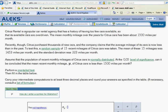Citrus Rental is a popular car rental agency that has a history of having too few cars available so that its available cars are overdriven. The mean monthly mileage over the years for Citrus cars has been about 1,500 miles per month. Recently though, Citrus purchased thousands of new cars and the company claims that the average mileage of its cars is now less than in the past.